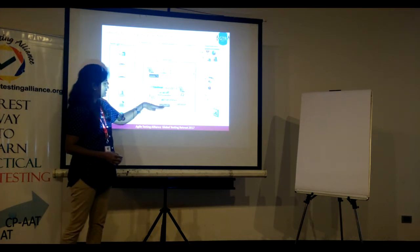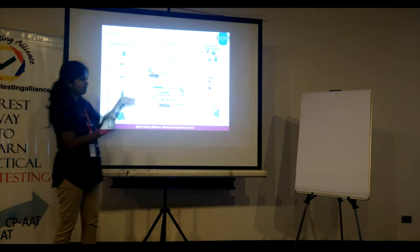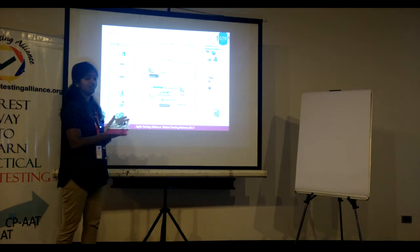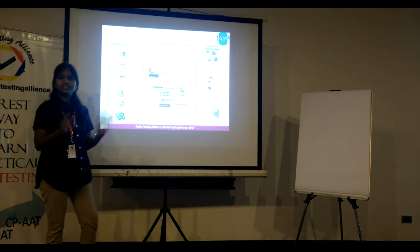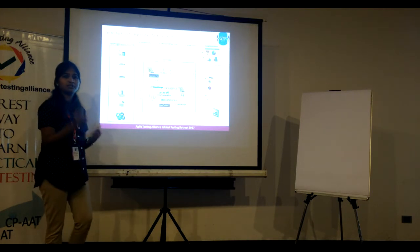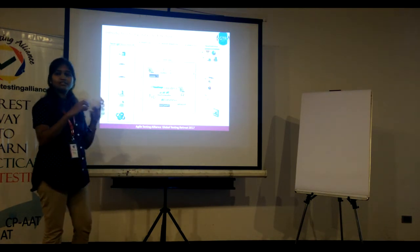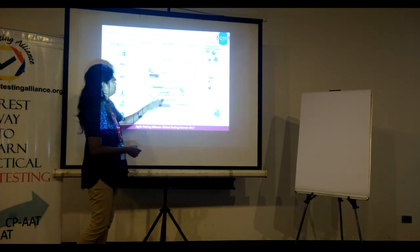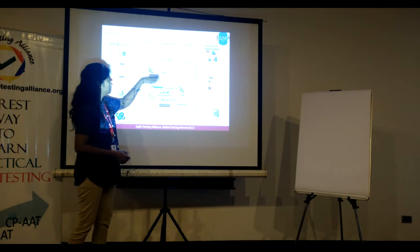Once data is in the data lake, transformation happens — for example via MapReduce — where business logic is applied. For instance, multiple systems may capture dates in different formats: DD-MMM-YY or DD-MMM, and they all differ. A set of business rules will manipulate the data and perform the required transformations.